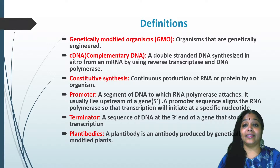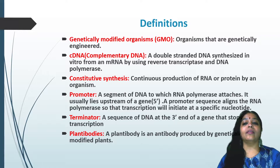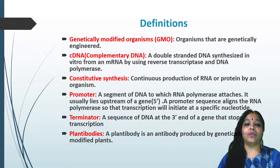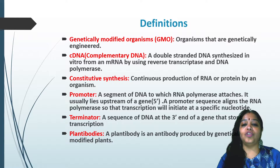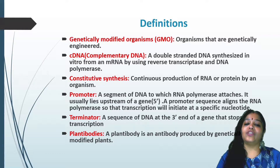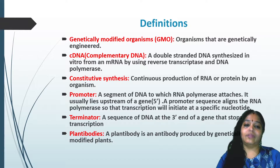Key terms: A genetically modified organism (GMO) is an organism that has been genetically engineered. Complementary DNA (cDNA) is a double-stranded DNA synthesized in vitro from an mRNA using reverse transcriptase and DNA polymerase. Constitutive synthesis refers to continuous production of RNA or protein by an organism. A promoter is a segment of DNA to which RNA polymerase attaches, lying upstream (5' region) of a gene, aligning RNA polymerase so transcription initiates at a specific site. A terminator is a sequence of DNA at the 3' end of a gene that stops transcription.